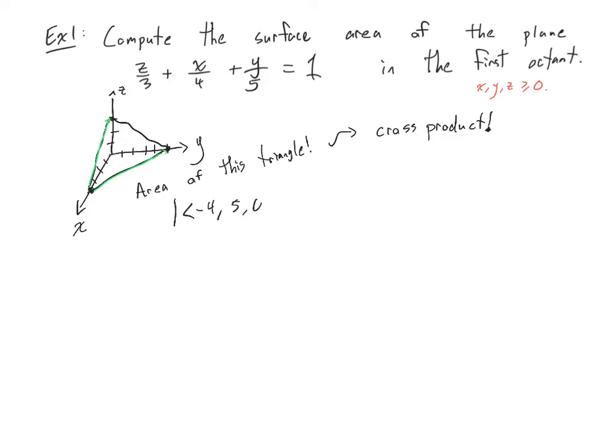increasing my y value by 5 and doing nothing in my z coordinate, cross. The other one is decreasing my x value by 4, not changing my y's and increasing my z's by 3. Take an absolute value. This should give me my surface area.